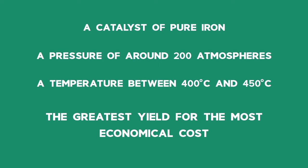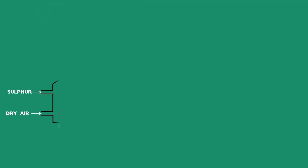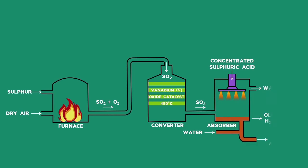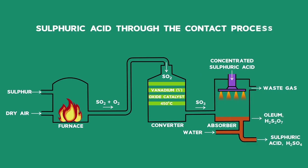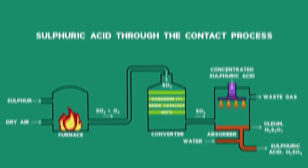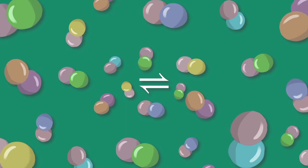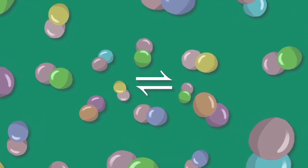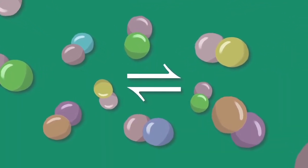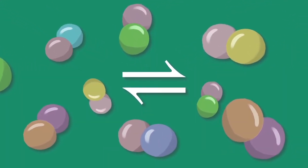The other industrial process that is of vital importance is the contact process, which is used to produce sulphuric acid. Using these processes, we will be looking at the factors that affect chemical equilibrium and how they are reflected on a graph.